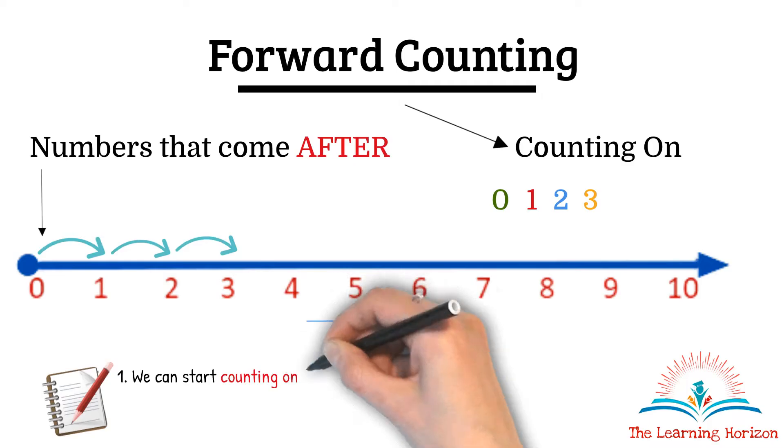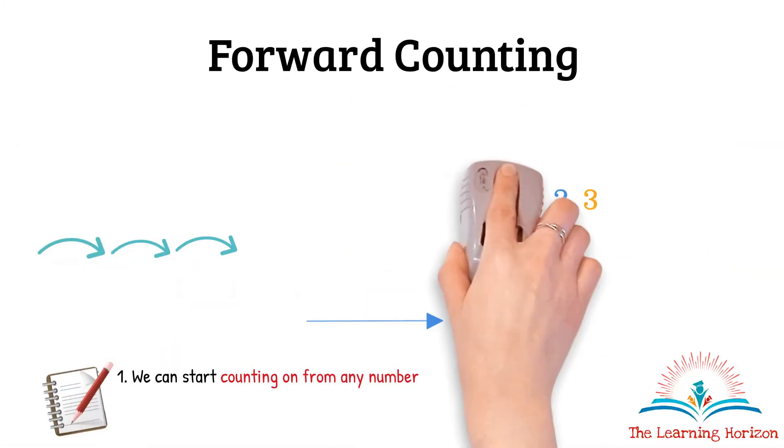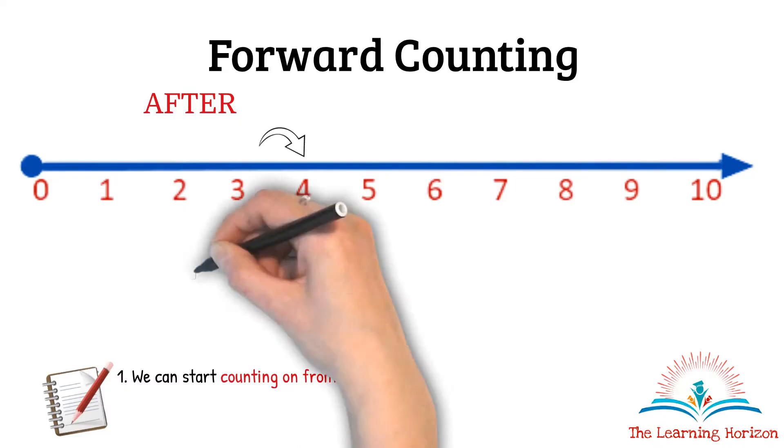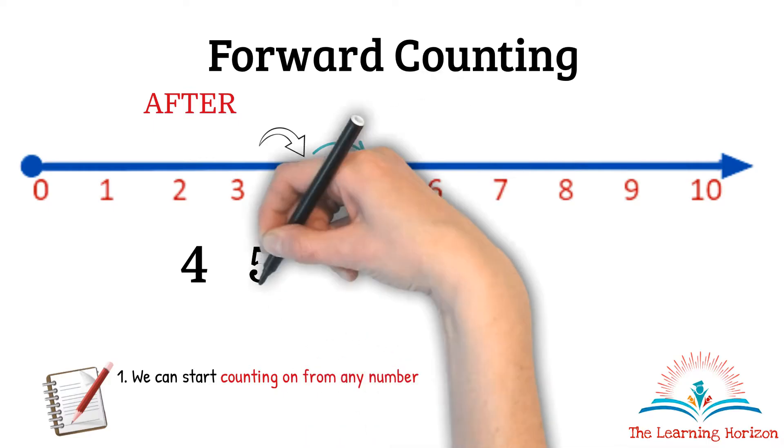We can start counting on from any number. For example, let us start counting from 4 and find what number comes next or what number comes after 4: 4, 5, 6.